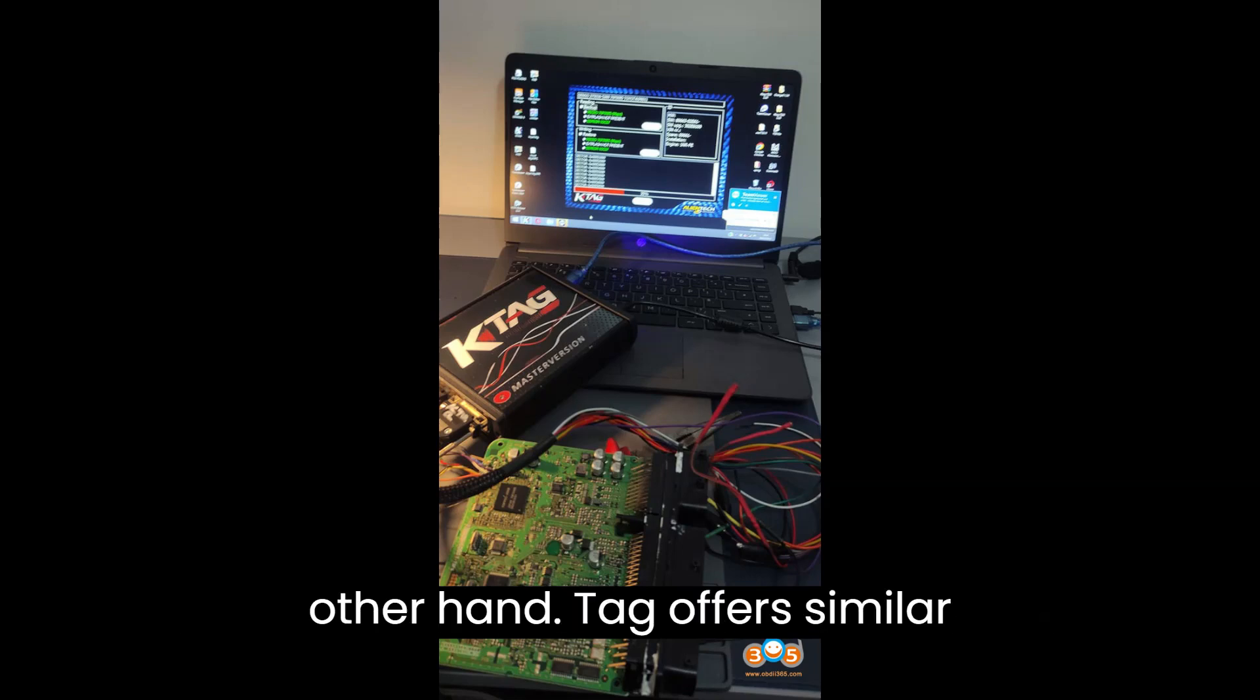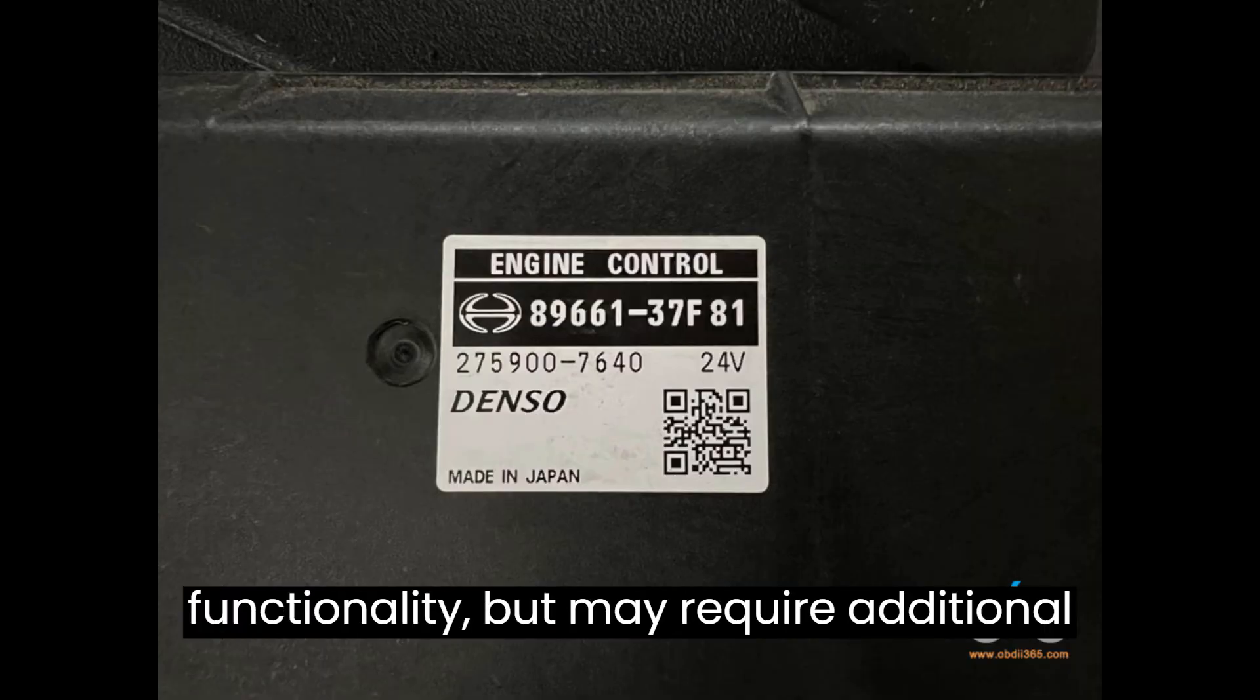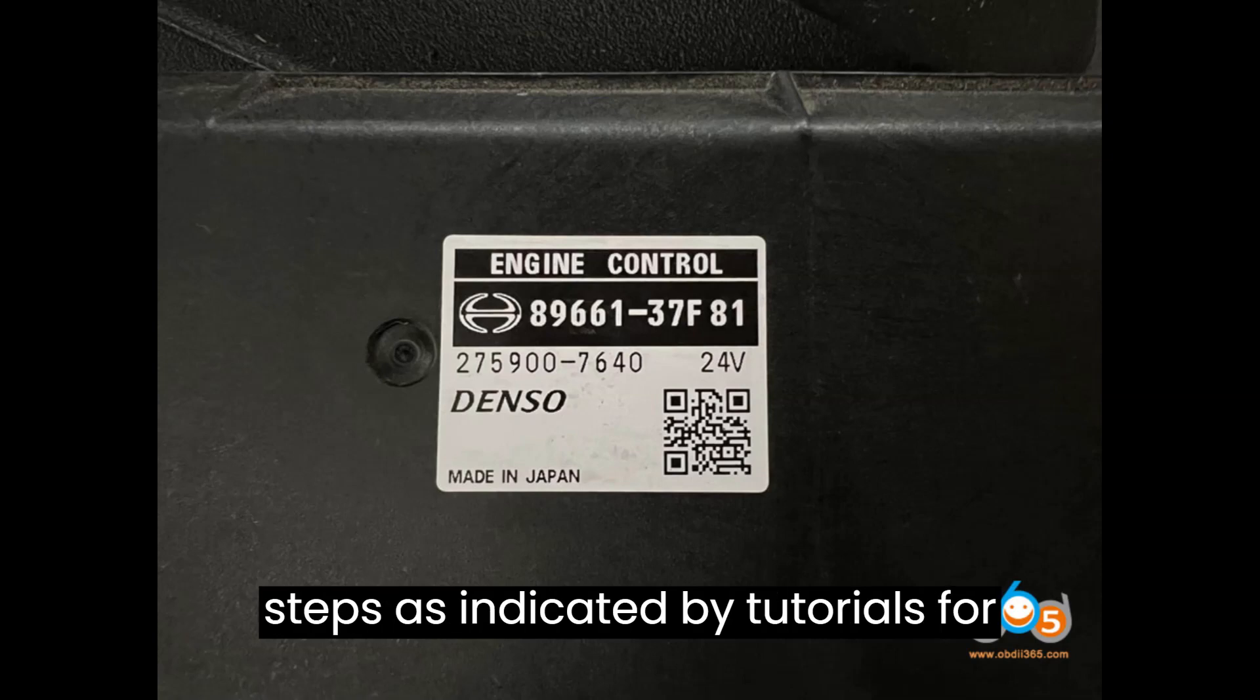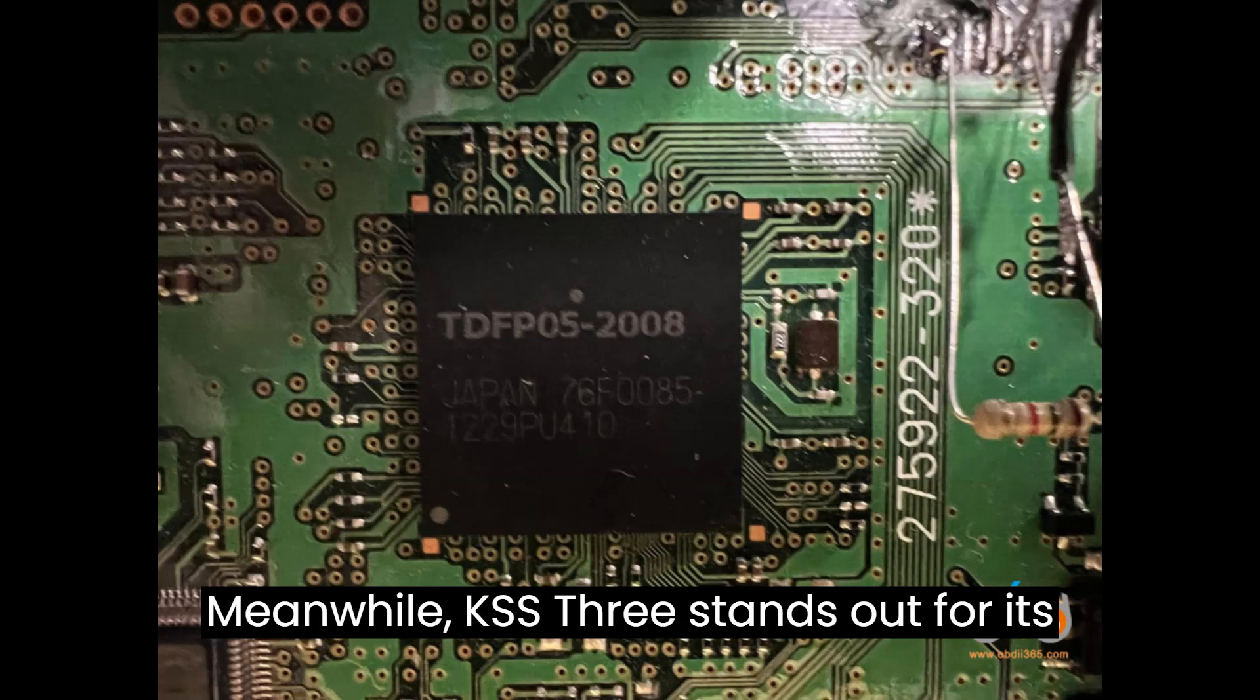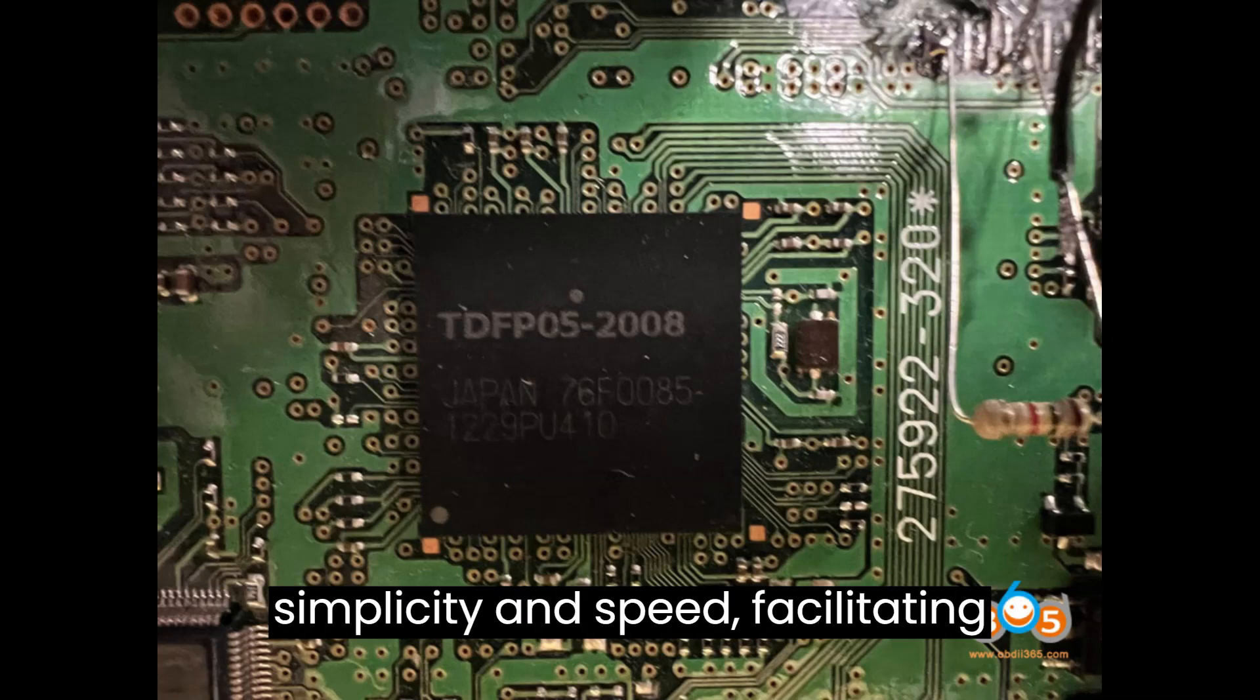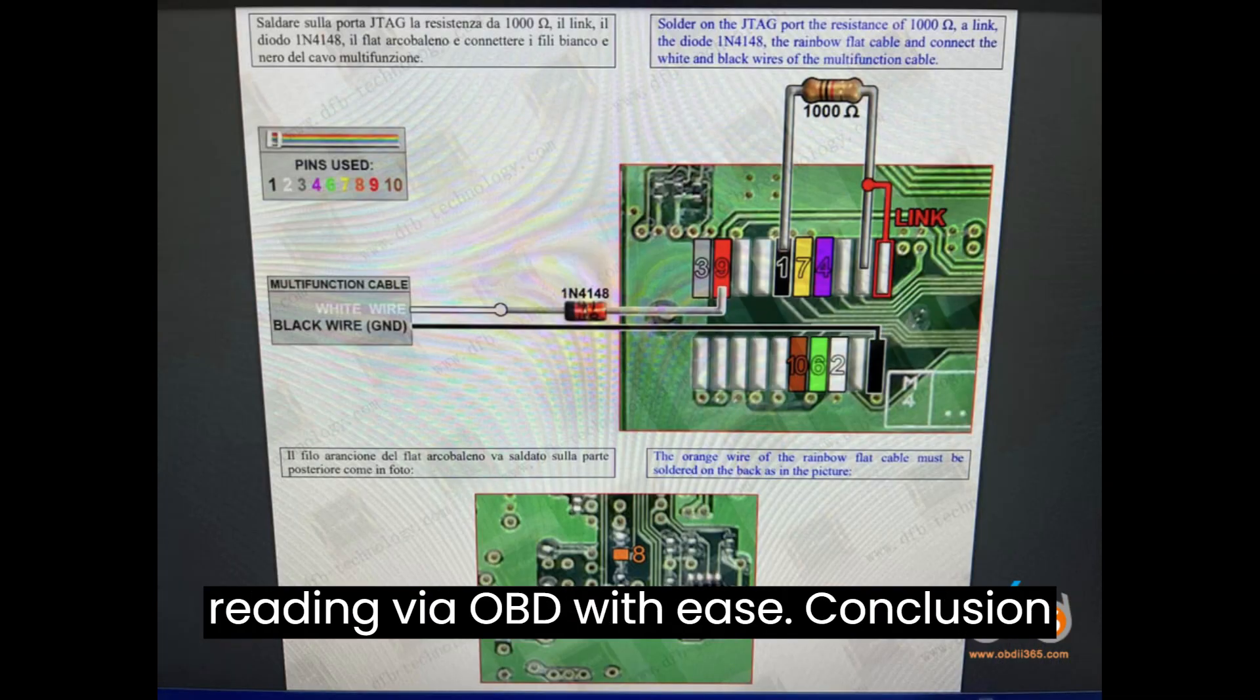On the other hand, TAG offers similar functionality but may require additional steps, as indicated by tutorials for addressing reading difficulties. Meanwhile, KESS-3 stands out for its simplicity and speed, facilitating reading via OBD with ease.